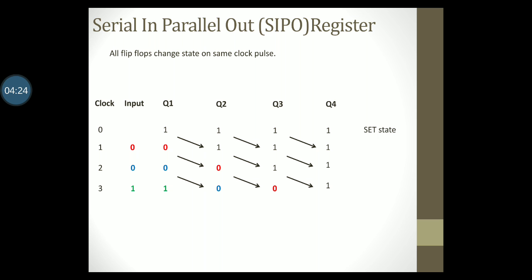Now let us say I give serial input of 1 again and the fourth clock pulse arrives. This 1 will appear at the output on Q1. The output at Q1 gets shifted to Q2. The output at Q2 gets shifted to Q3 and the output at Q3 gets shifted to Q4. All this is happening on the fourth clock pulse. This can continue for more number of clock pulses. The output of this register is read at Q1, Q2, Q3 and Q4.